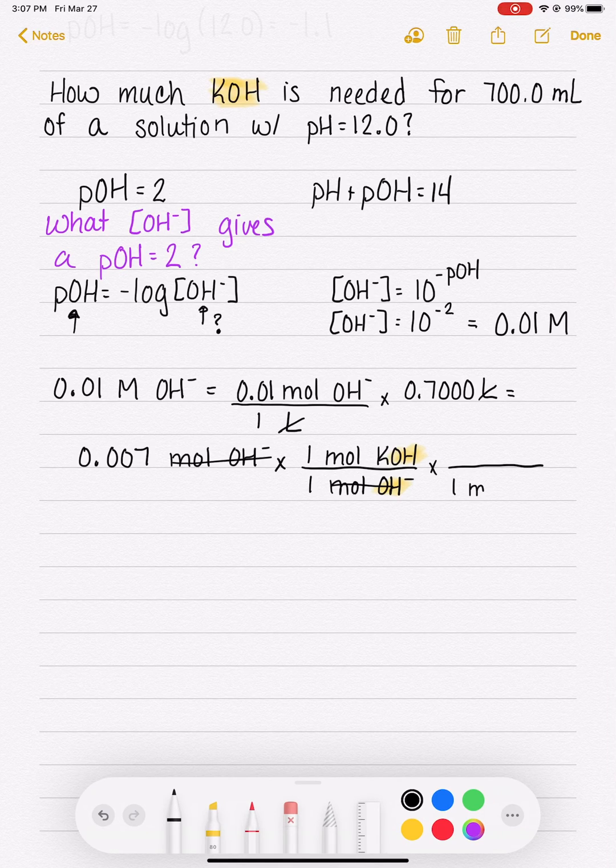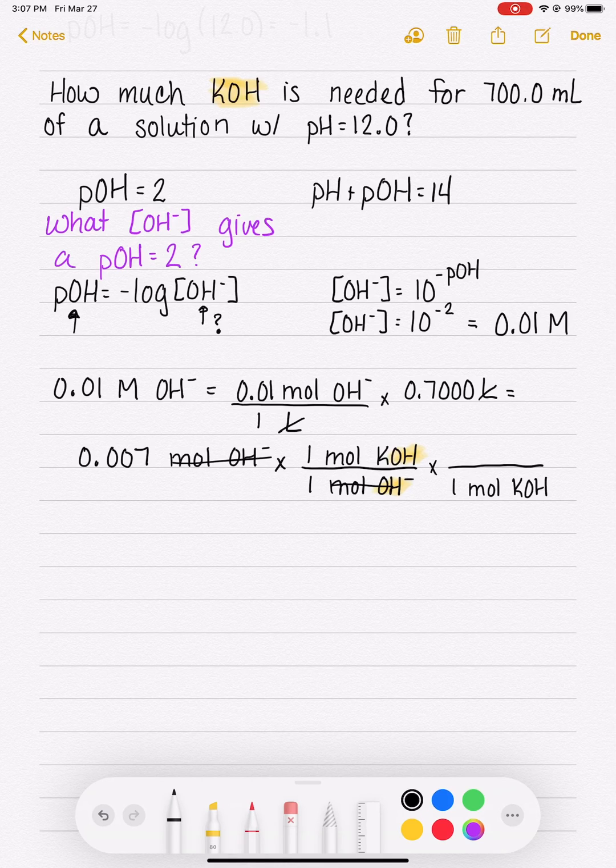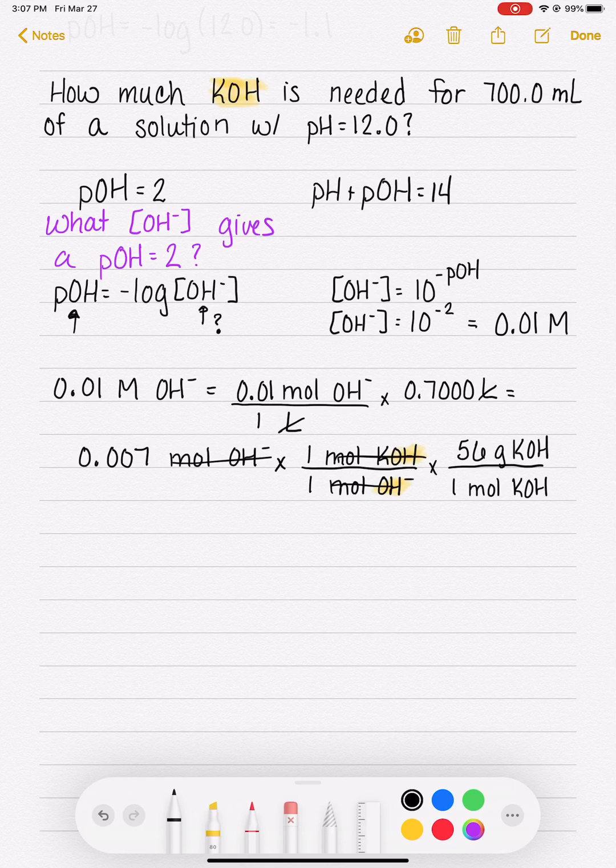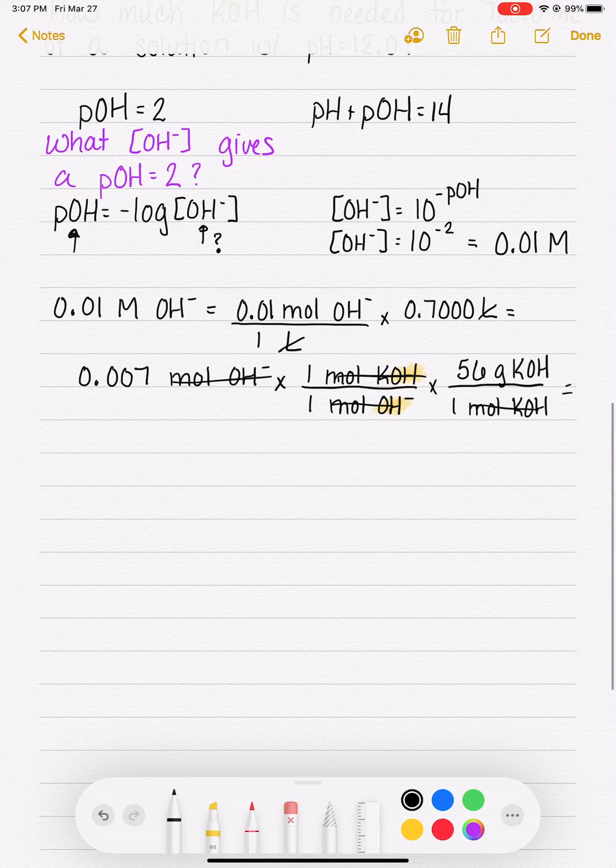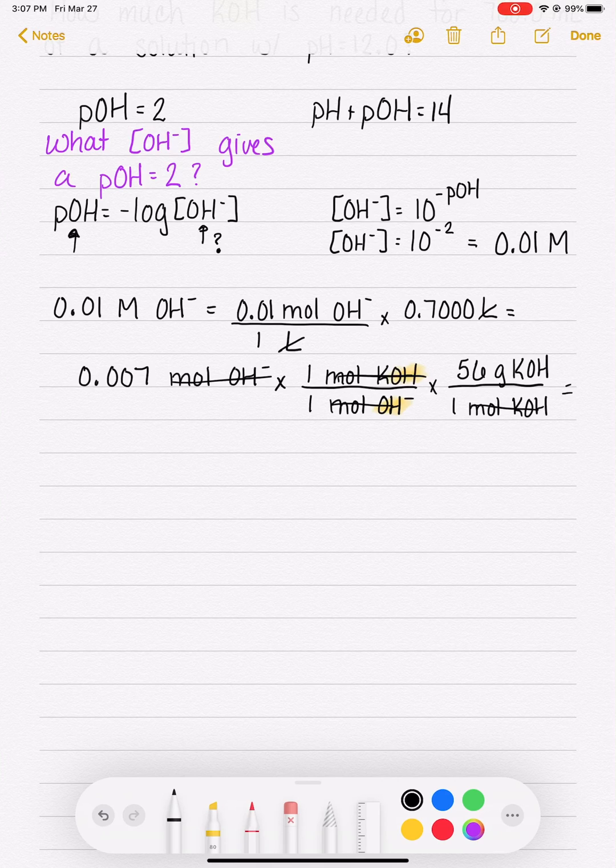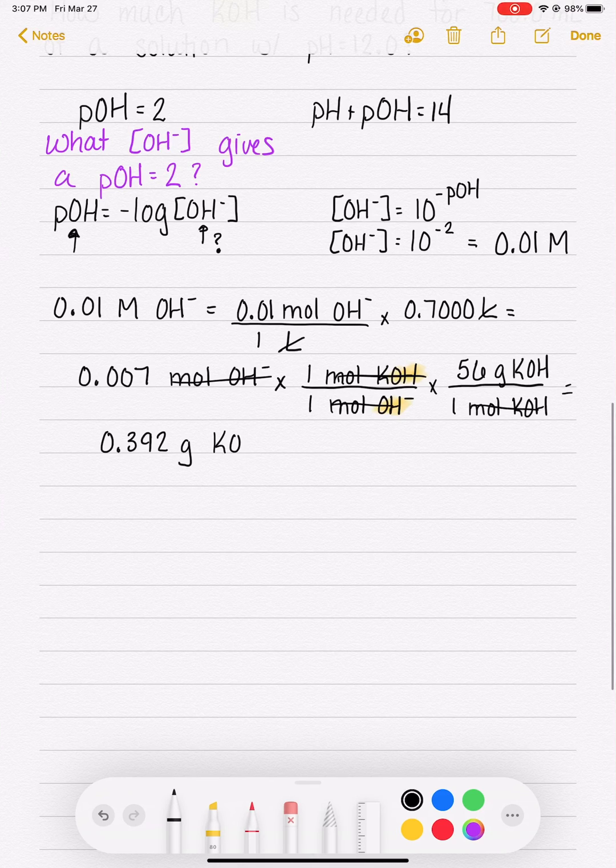Our last step is to do a gram to mole conversion for KOH. The molecular weight of KOH is 56 grams. And we are going to need 0.392 grams of KOH to get the solution with that pH.